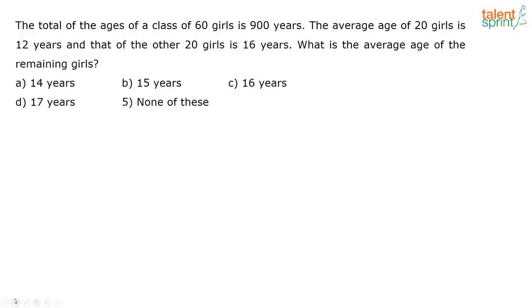The total ages of a class of 60 girls is 900 years. The average age of 20 girls is 12 years and that of the other 20 girls is 16 years. What is the average of the remaining girls?